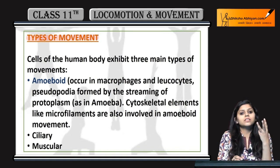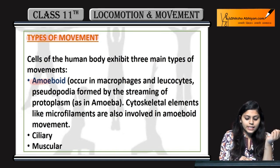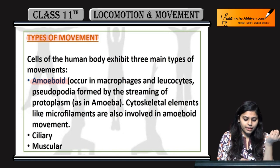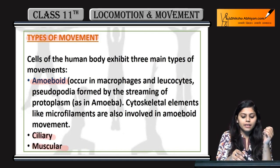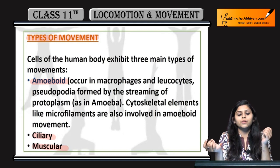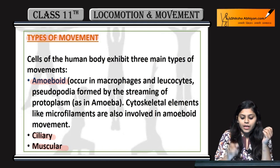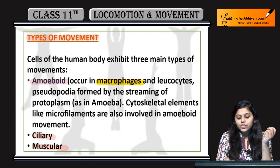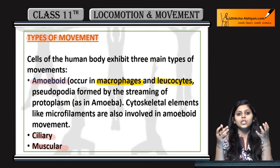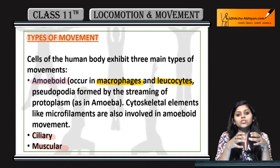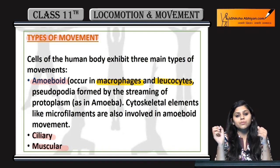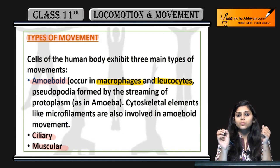Movement ki types are three different types: amoeboid, ciliary, and muscular. Sabse pehle amoeboid movement — yeh macrophages mein aur leukocytes mein hoti hai. Leukocytes are white blood cells, toh macrophages aur leukocytes mein amoeboid movement hoti hai.